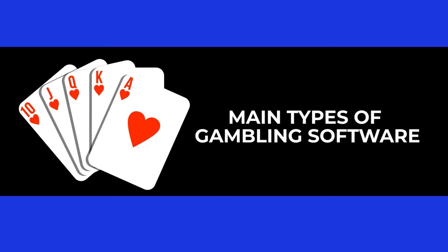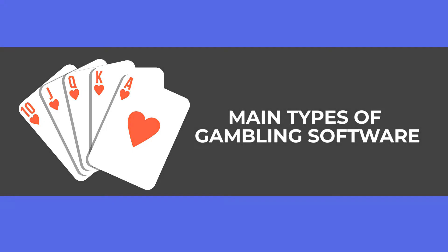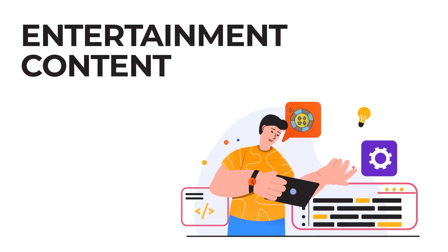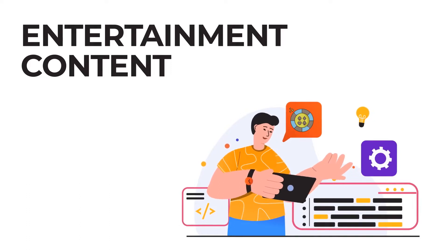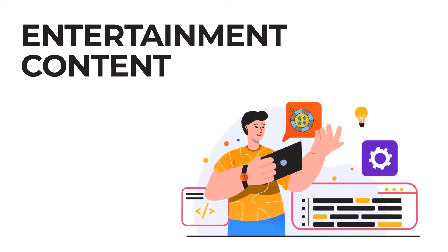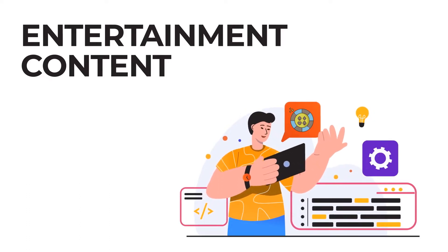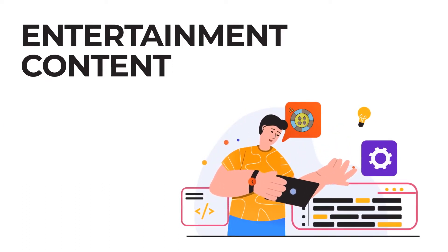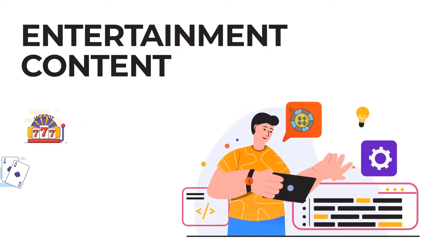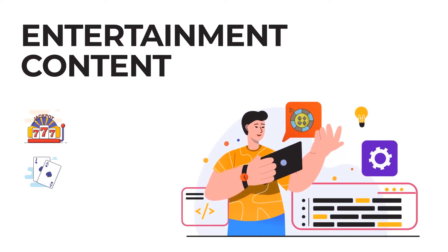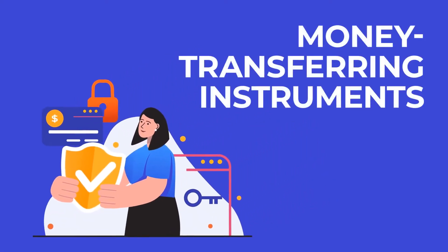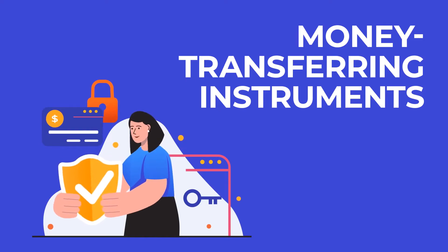Let's overview the main types of software for a lucrative gaming business. The first one is entertainment content. A casino has to be equipped with a variety of gaming software, including slots, card-based options, and others. Also, you will need money transferring instruments.